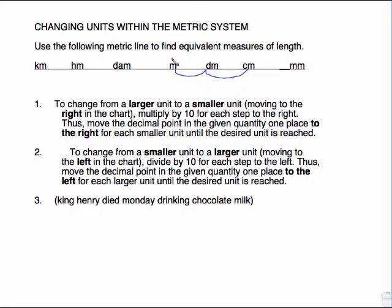So you move the decimal the prescribed number of places that will get you to land on the new word. This is King Henry died Monday drinking chocolate milk. If that will help you memorize that relationship there.